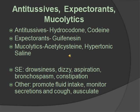Antitussives suppress cough. Examples are hydrocodone and codeine, which are opioids and have a potential for abuse. Expectorants promote increased mucus secretions to increase cough production — this includes guaifenesin. Mucolytics enhance the flow of secretions in the respiratory tract; examples are acetylcysteine and hypertonic saline, used for conditions like cystic fibrosis. Side effects include drowsiness, dizziness, aspiration, bronchospasm, and constipation. Interventions include promoting fluid intake, monitoring secretions for amount and character, monitoring the cough effort, and auscultating for adventitious lung sounds.